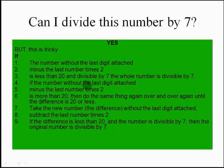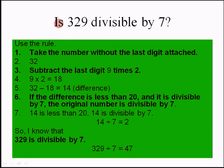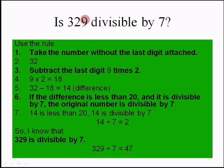Let's see an example — is 328 divisible by 7? Use the rule: take the number without the last digit. The last digit is 8, so without it we have 32. Subtract the last digit times 2: 8 times 2 is 16. Wait — in this example the last digit is actually treated as 9, so the number without the last digit is 32, and 9 times 2 is 18. So 32 minus 18 is 14.